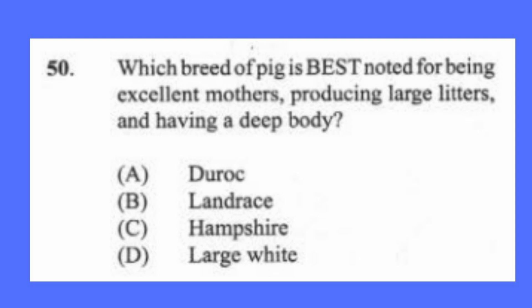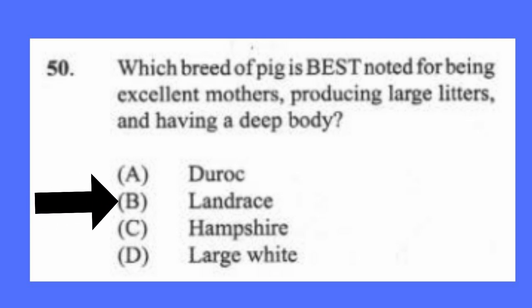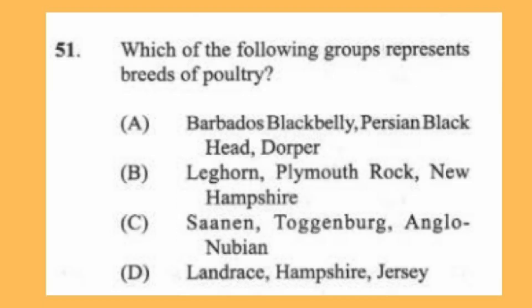Question 50: Which breed of pig is best noted for being an excellent mother, producing large litters, and having a deep body? (a) Duroc, (b) Landrace, (c) Hamshire, (d) Large White. The answer is B, Landrace. The difference between Landrace and Large White is that the Large White has erect ears, while the Landrace's ears are flopped over the eyes.